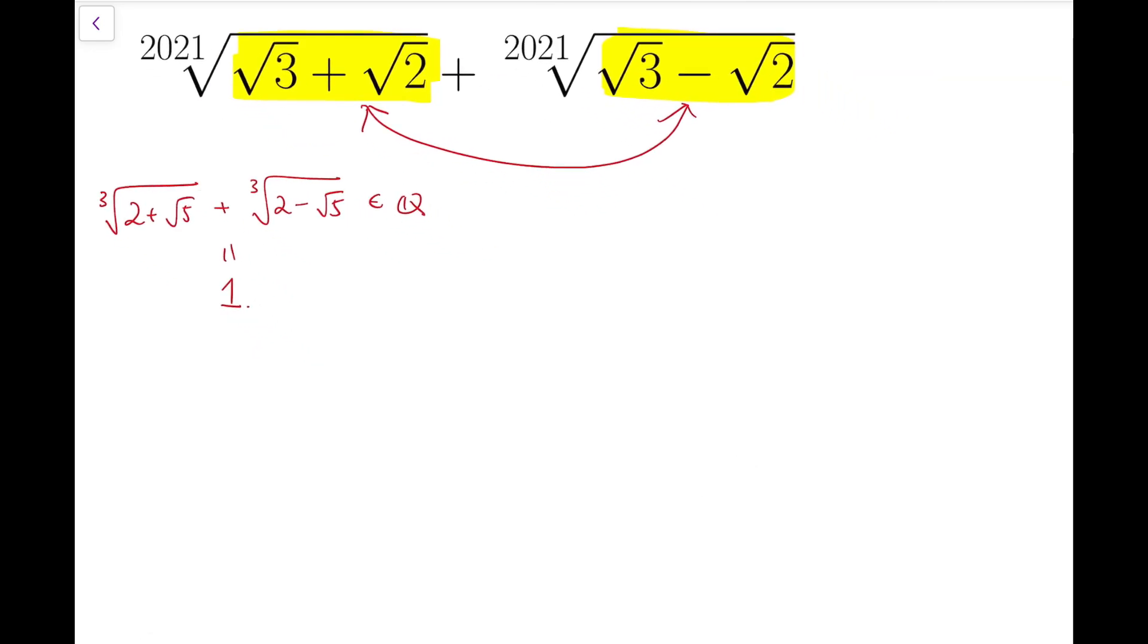But for the number that we are talking about, the 2021st root of the two numbers added together, this number is actually irrational, which means it cannot be written as a fraction. So now I'm going to prove this.